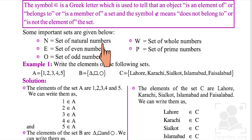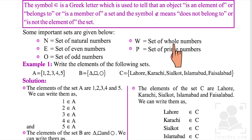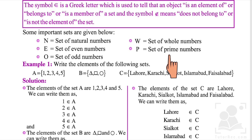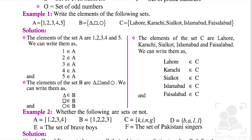Some important sets: the set of natural numbers N = {1, 2, 3, …}; the set of even numbers = {2, 4, 6, 8, …}; the set of odd numbers = {1, 3, 5, …} — numbers whose pairs cannot be made; the set of whole numbers W = {0, 1, 2, …} — starting from 0 onwards; and P is the set of prime numbers — numbers whose multiples do not appear in any other number's table. These are all examples of sets denoted by capital letters. Exercise: write the elements of the following sets.